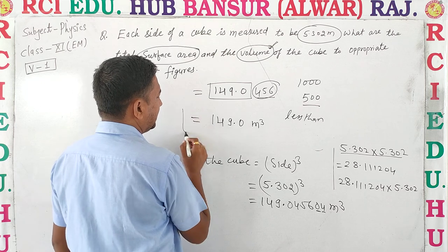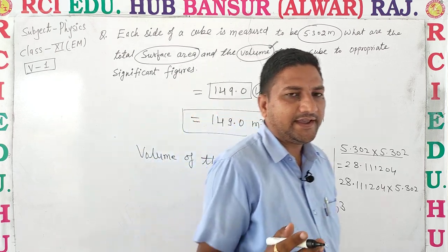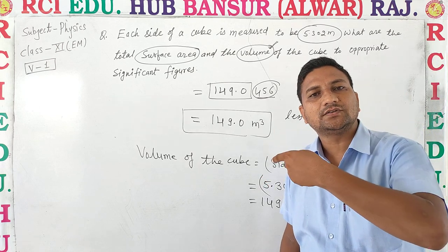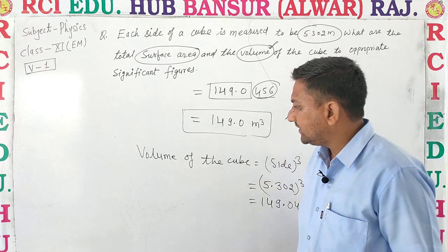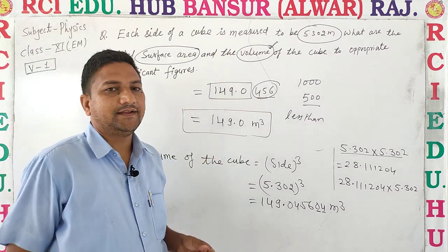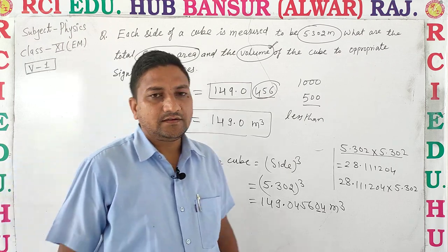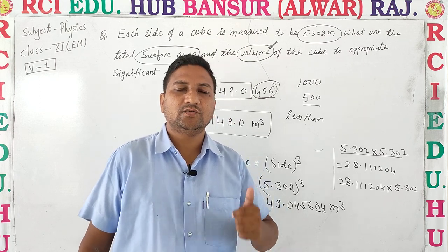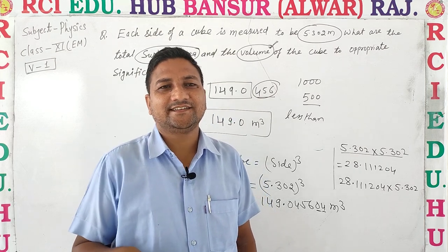Significant figures check करो: 1, 2, 3, 4 — ध्यान रहे point के just बाद वाला zero भी significant figures में count होता है, यह rule है। इस तरह से significant figures का यह numerical समझना है। कोई भी problem हो तो पूछ लेना। RCI की videos को like करें, subscribe करें और share करें। Thank you class!